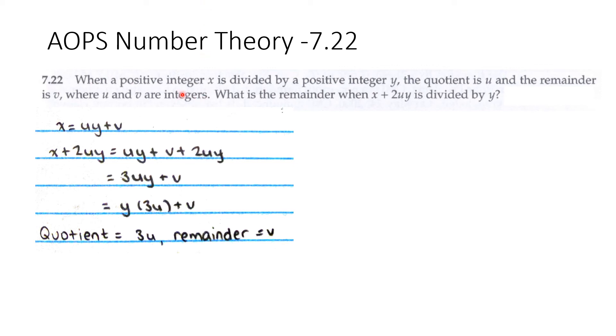So since when x is divided by y, the quotient is u and the remainder is v, we have x = uy + v.